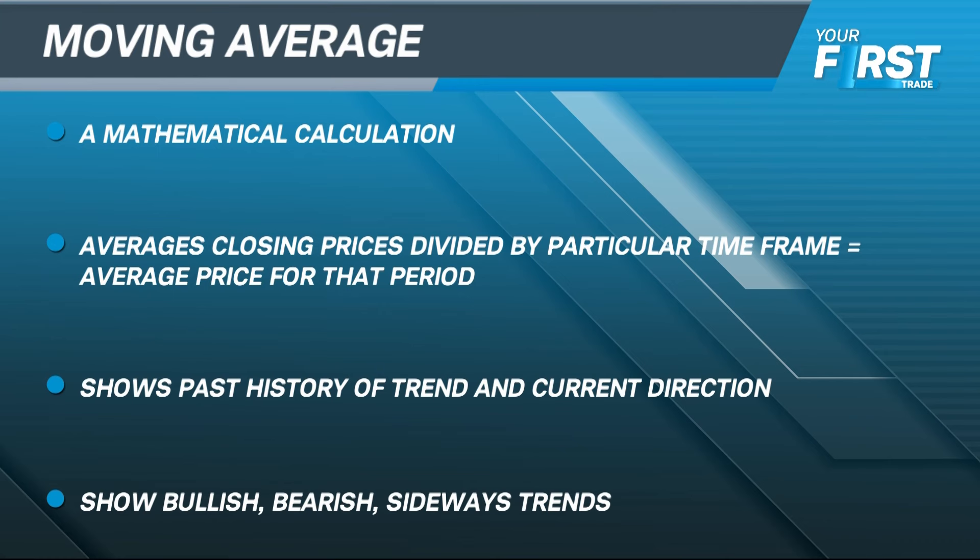Does that mean a moving average can take some of the guesswork out of determining trend direction? Yes, it sure does. A moving average is just a mathematical calculation that averages closing prices divided by a particular time frame to get an average price for that period. So it's easier to see the past history of the trend as well as the current direction.